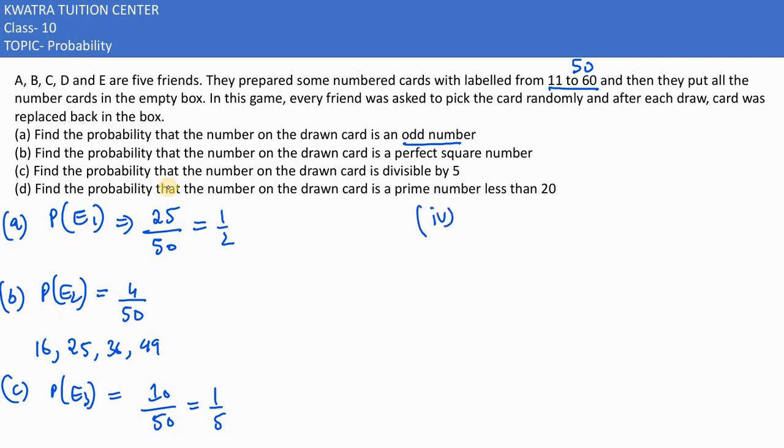4th situation says that the prime number is less than 20. Less than 20. Before we see the prime number, we have to see the prime number from 20. 11 is a prime number, 13 is a prime number, 17 is a prime number, then we have 19. So how many numbers are prime? 4. 4 over 50 and 4 over 50 reduce. What will happen? 2 by 25.